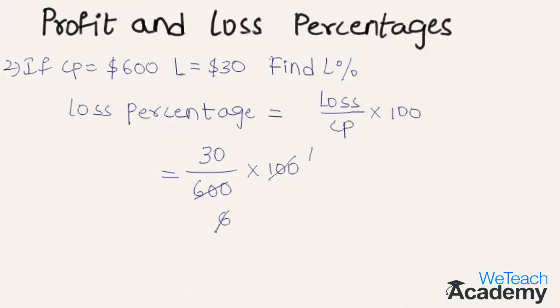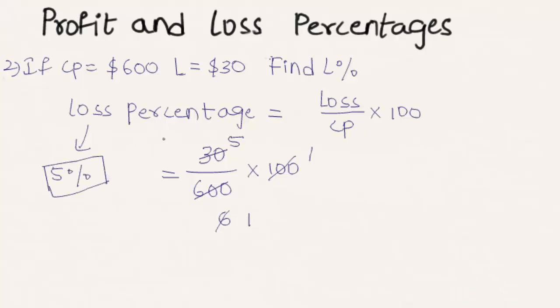Simplifying further, 6 times 5 is 30. So the loss percentage is 5%. This was a basic introduction to profit and loss percentages.